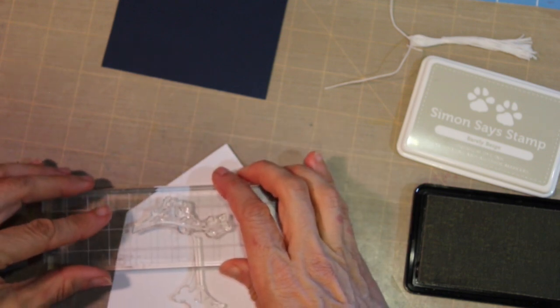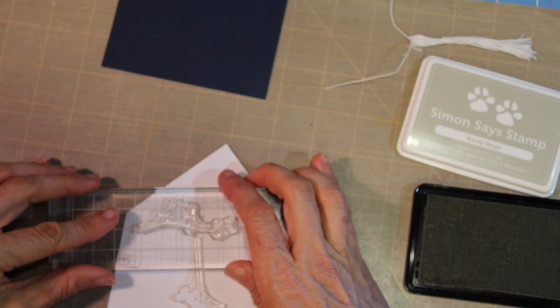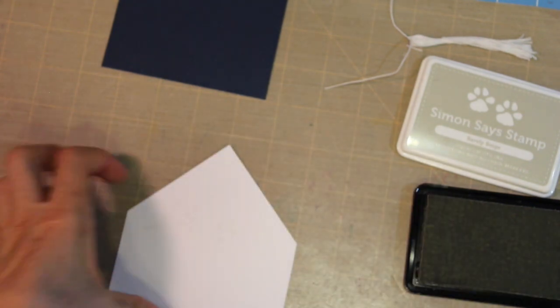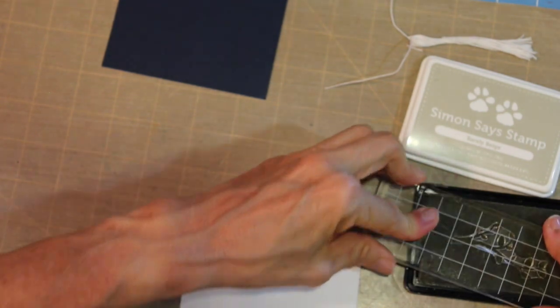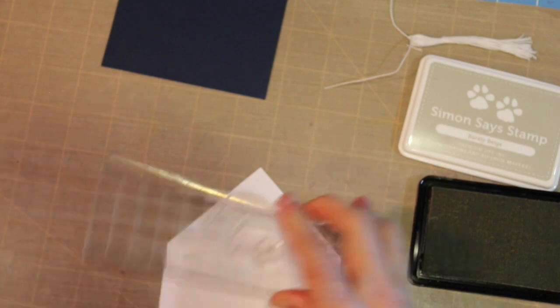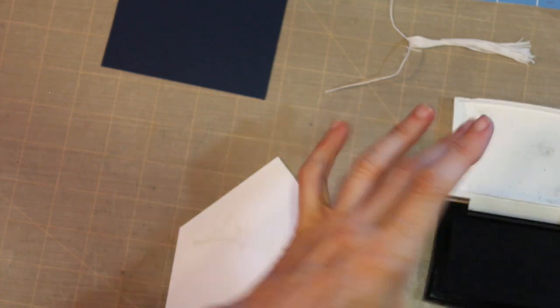So I've cut my inside panel and I'm using white, and of course you could use whatever color you wanted to. I'm going to use some of the stamps from the Hero Arts kit. I'm going to use the tree, and I'm using some light gray ink to put down a couple of impressions of the tree, and then I'm going to come back with some crisp black ink and add another tree.